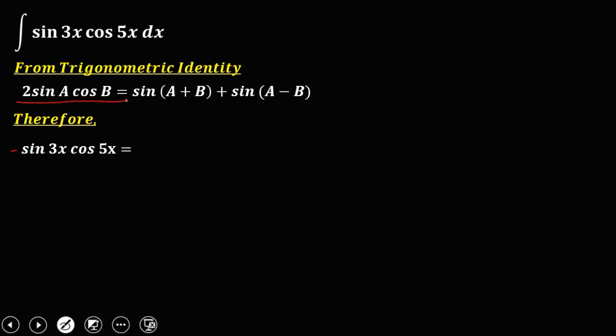So we need to add 2, giving us 2 sine 3x cosine 5x. Since we added 2, we need to multiply the whole equation by 1 half so that the given expression won't change — because if we cancel the 2, we have the same as the given: sine 3x cosine 5x.